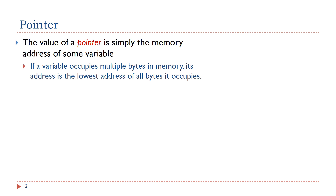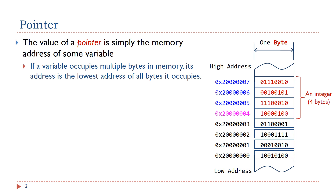What is a pointer? The value of a pointer is simply the memory address of some variable stored in computer memory. If a variable occupies multiple bytes in memory, the address of this variable is defined as the lowest address of all bytes it occupies. Let me give you an example. Suppose a 32-bit integer takes these 4 bytes in memory, starting from 0x2000004 to 0x2000007 in hex.